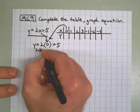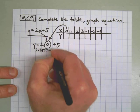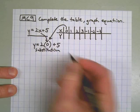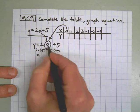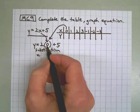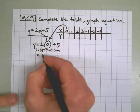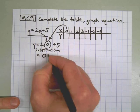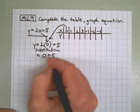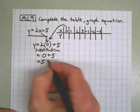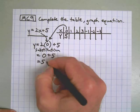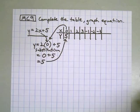Substitution is what that's called to get the solution. 2 times 0, in other words, if I have something called 0 and there's 2 of them, then that equals 0 plus 5. So my y value is 5. So I go up to the table and I put it in there.